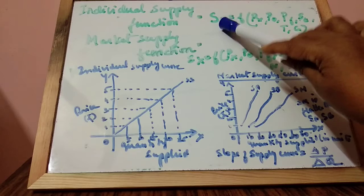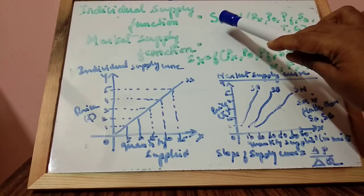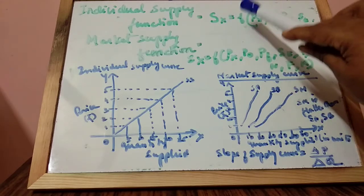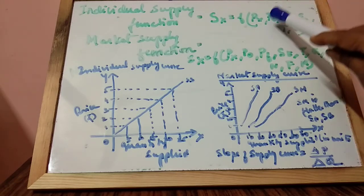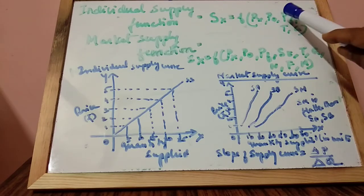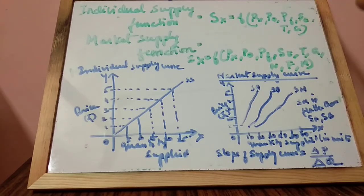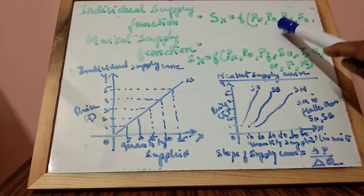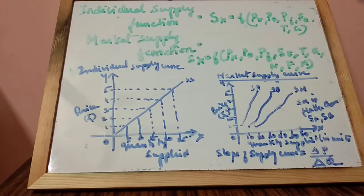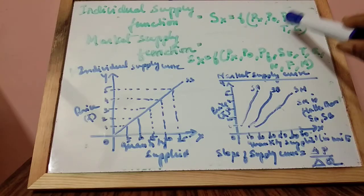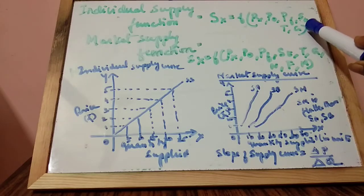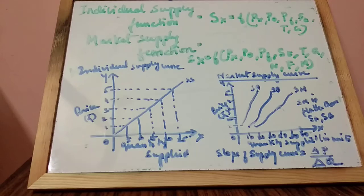SX stands for supply of a given commodity X. That is equal to a function of: PX — price of the given commodity X; PO — price of other goods; PF — price of factors of production; ST — state of technology; T — taxation policy; G — goals of the firm. So these are the factors influencing supply, and their functional relationship is the supply function of a given commodity.